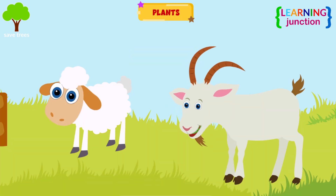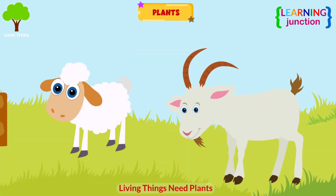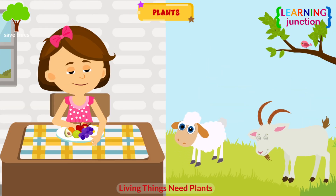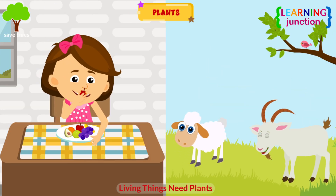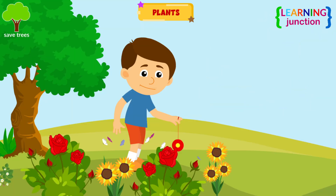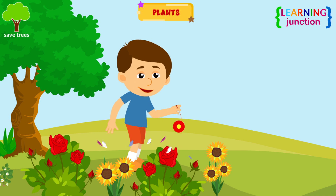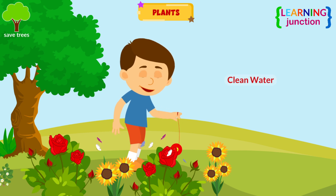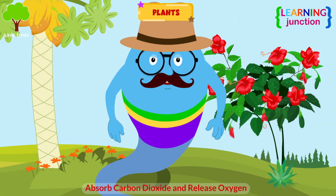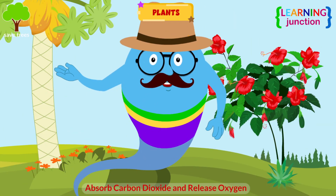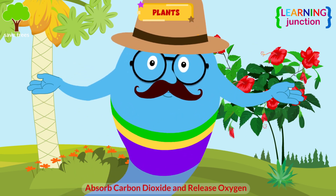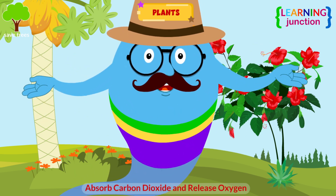Plants. Living things need plants to live. They eat them, and plants are home to many creatures. Plants help to clean water, too. They absorb carbon dioxide and release oxygen from their leaves, which people need to breathe.